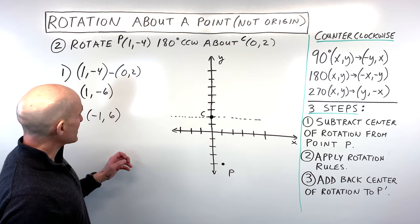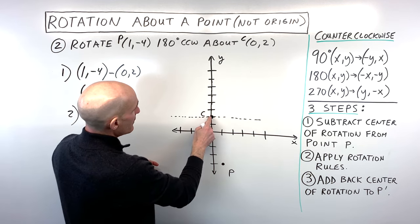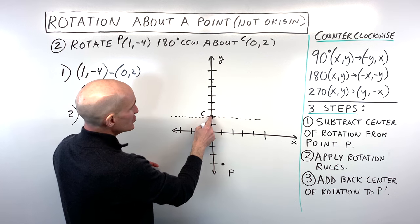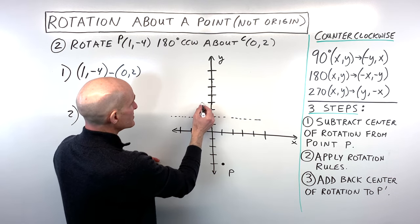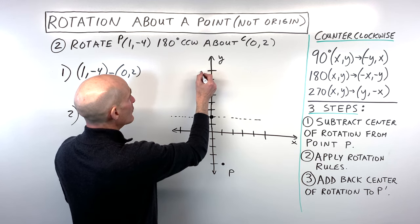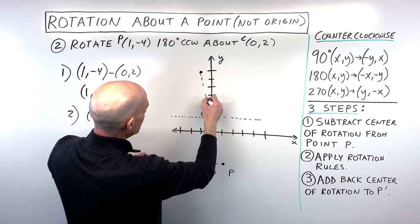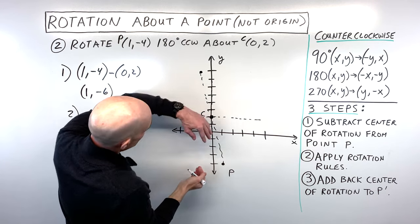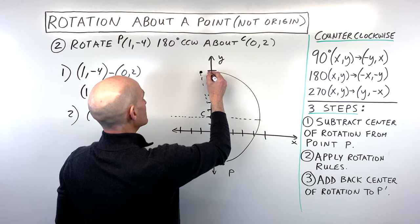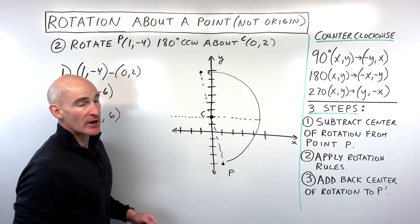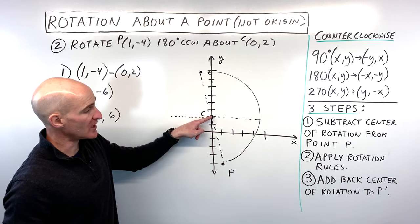What does (-1, 6) mean? From this center of rotation, going left 1, up 6 puts us at this new position. You're basically doing a half turn — I'll draw a dotted line — and you can see the point pivoting about this new center of rotation.